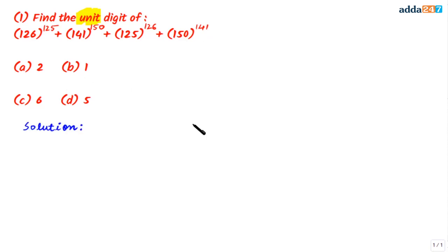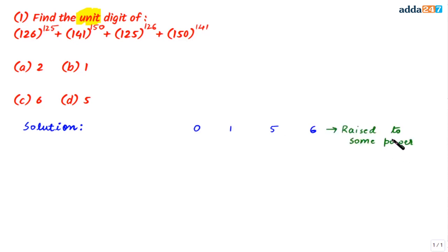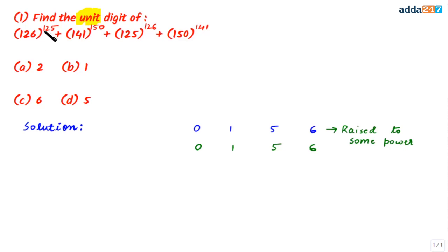The trick involved here is that when numbers having 0, 1, 5, or 6 at their units place are raised to any power, the result also has 0, 1, 5, or 6 at the units place. So if we have 126 raised to the power 125 — as given in the question —